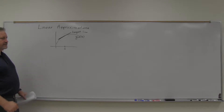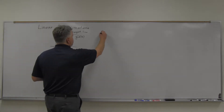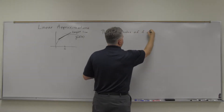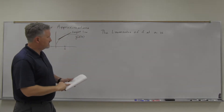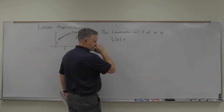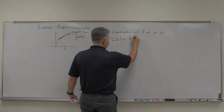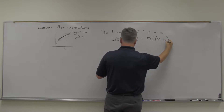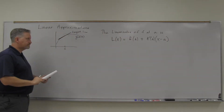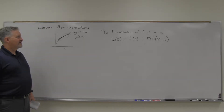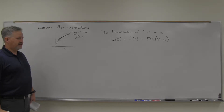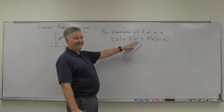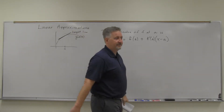Where this comes in — it's called the linearization of f at a. It's l of x equals f of a plus f prime of a times x minus a. That's the linearization of f at a. But you want to know what that is? This is just the tangent line at a. This just gives you a formula for the tangent line at a.